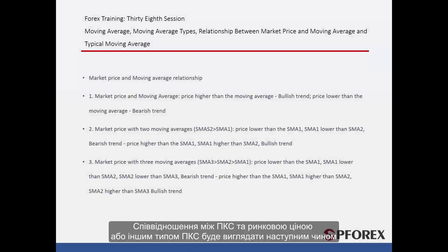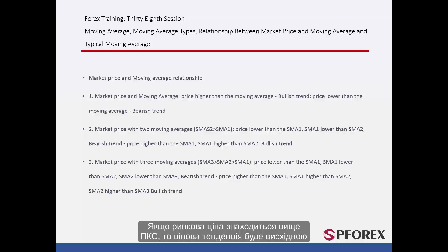The relation between SMA and a market price or another SMA type is as follows. First, Price and SMA: if a market price is under SMA, then a sell order would be more appropriate. If a market price is above SMA, then a price trend would be an upward one.